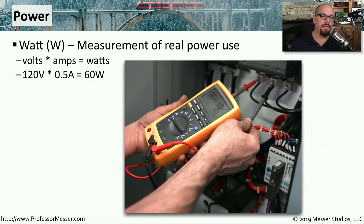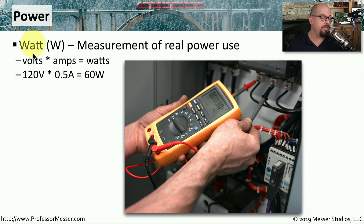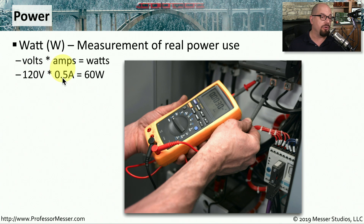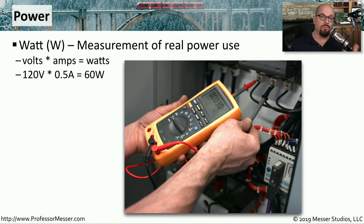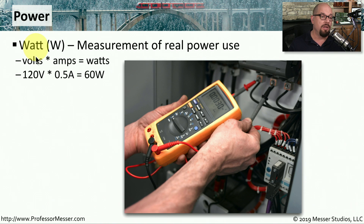Another electrical measurement you might see is watts, abbreviated as a capital W. This is considered a measurement of real power use. To calculate it, you multiply volts times amps to equal the number of watts. For example, if you have a 120-volt electrical line and you're using 0.5 amps, then your real power use is 60 watts. The total amount of water flowing through the hose is a combination of the pressure of the water (the volts) multiplied by the diameter of the hose (the amps).